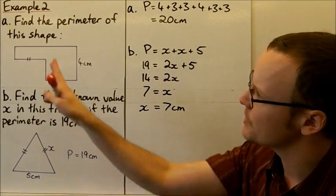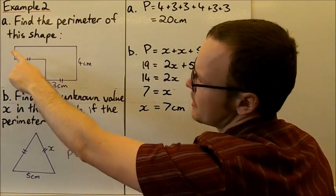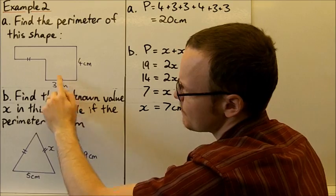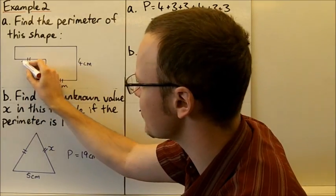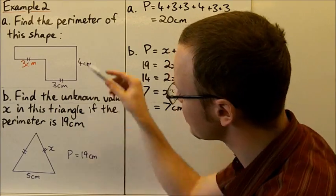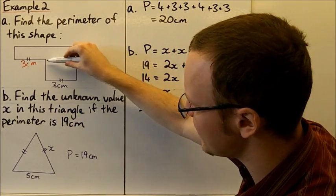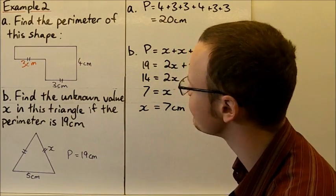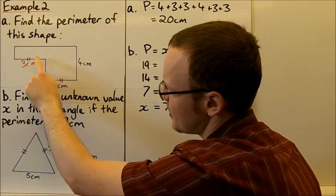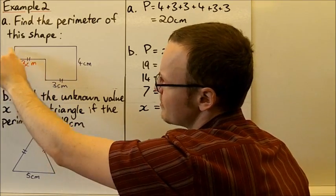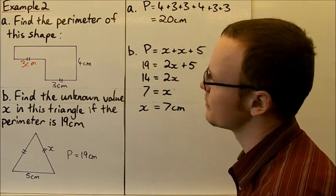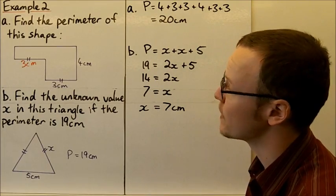Looking at our next example, we need to find the perimeter of this shape. These two lengths are the same, so those sides are each 3 centimetres, making the total along the bottom 3 plus 3 centimetres. The top length is 4 centimetres, and the two vertical sections on the right also add to 4 centimetres. Adding all the way around: 4 plus 3 plus 3 plus 4 plus 3 plus 3 equals 20 centimetres.